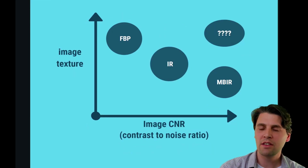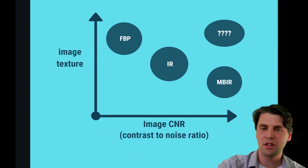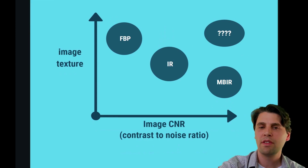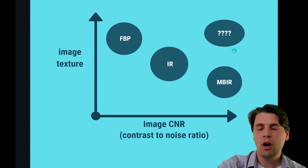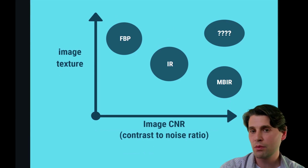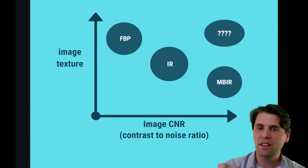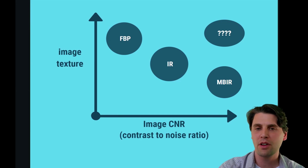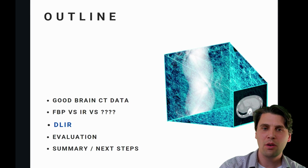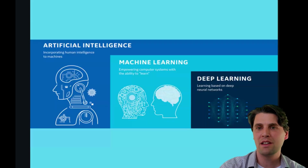Additionally, image quality and texture were also of concern. There were some concerns with iterative reconstructions as far as the texture in the images — it's a little bit more plasticky in some iterative reconstructions as a result of the regularization procedure used. So what we were also looking for was: can we achieve that improvement in contrast-to-noise ratio while having the texture of filtered back projection? Is there a technology that could do that — we were asking ourselves about three or four years ago?